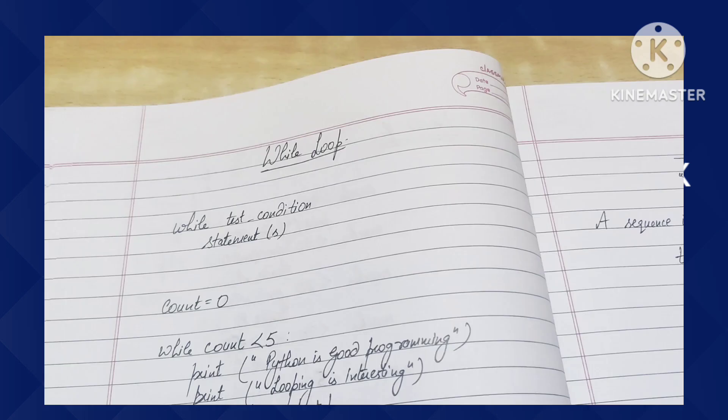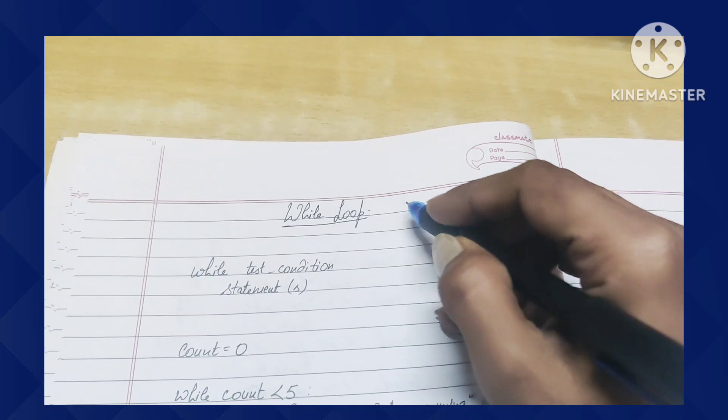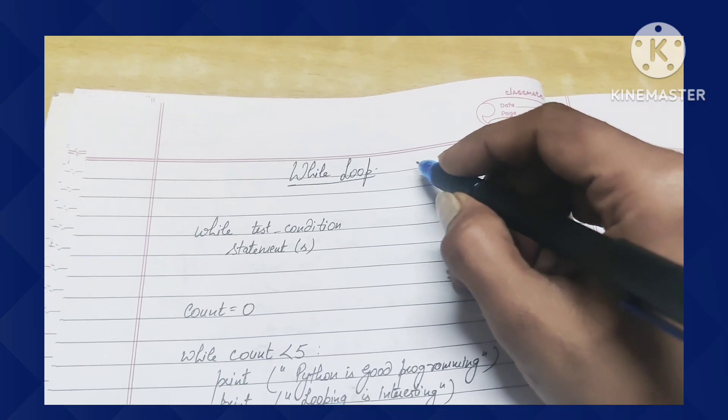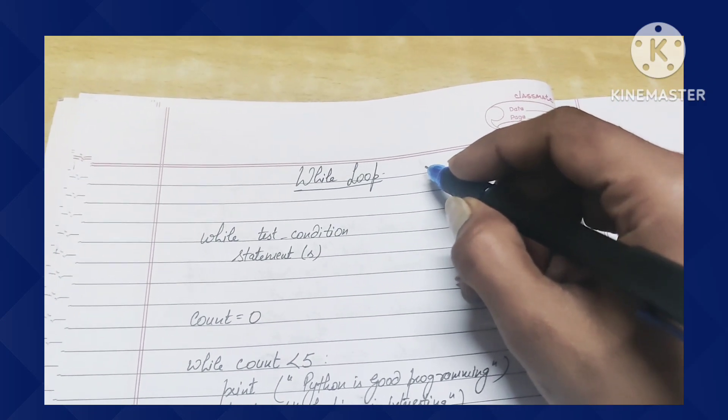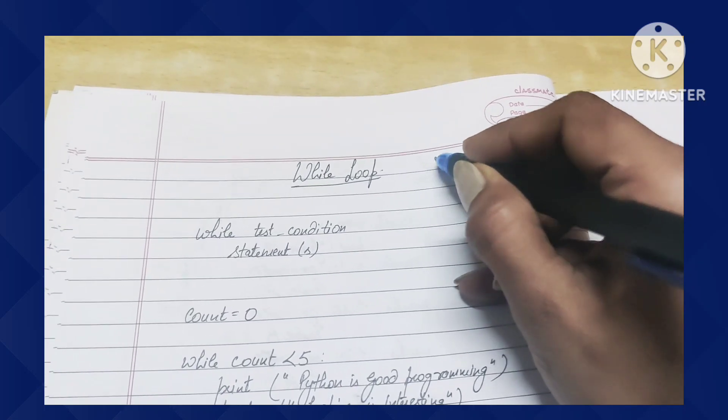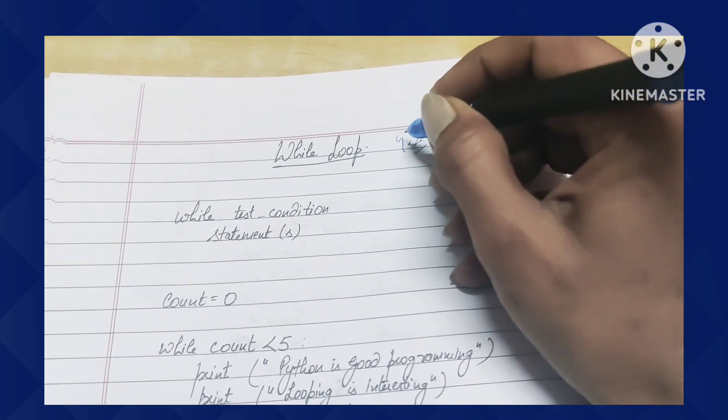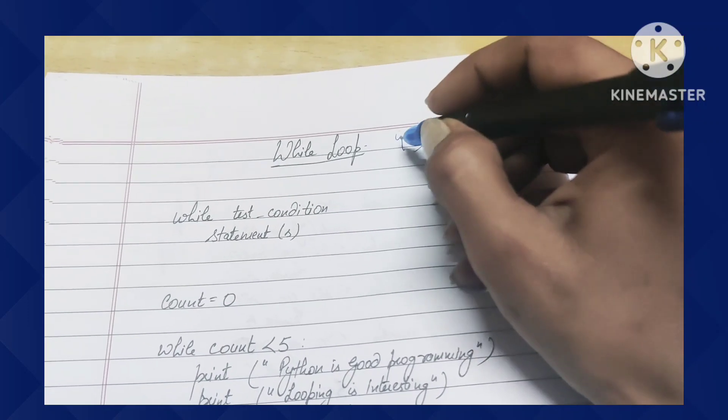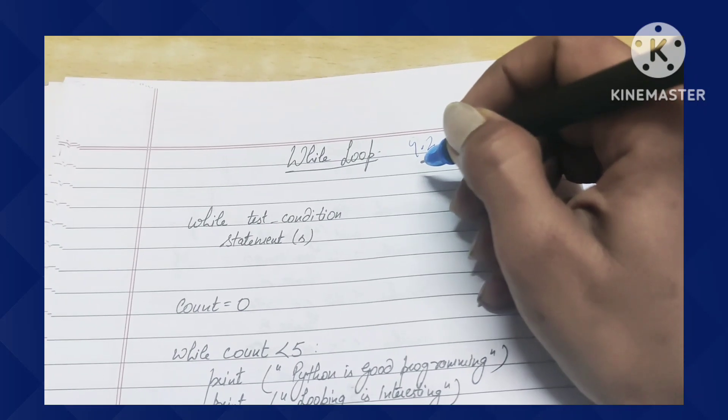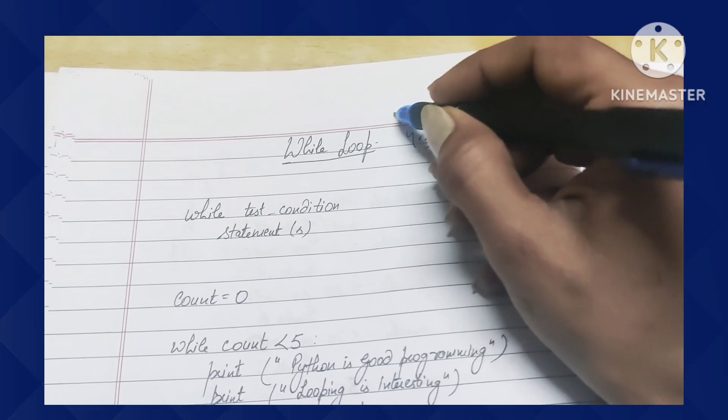This is the next part of control statements. In the previous part we discussed decision making and branching statements like if, if-else, if-elif, and nested if. This is part 9.2, the continuity of the ninth part with the shorter video on decision making and branching statements. The link will be available in the description box.